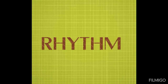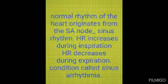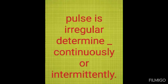The second characteristic feature of pulse is rhythm. The normal rhythm originates from the SA node and is called sinus rhythm. Sinus rhythm is seldom completely regular because heart rate increases during inspiration and decreases during expiration — a condition called sinus arrhythmia, most obvious in children, young adults, and athletes. When the pulse is irregular, identify whether the irregularity is continuous or intermittent.